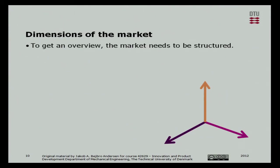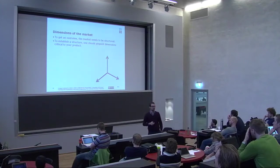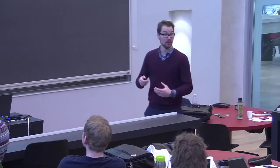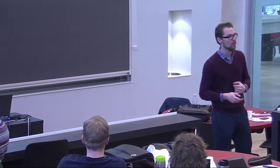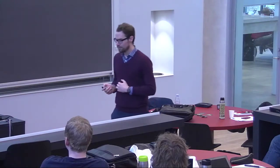The market tends to have a structure to it, and a lot of the work in this lecture is on establishing a structure for the market. Establishing a structure starts by trying to pinpoint some dimensions of the market. You could have a dimension like: is it local, is it global, is it large companies, is it small companies? For the Xerox case Thomas mentioned, is it 10 copies per day or 10,000 copies per day? Those are different sizes of the same dimension, and you can use those to structure your market.